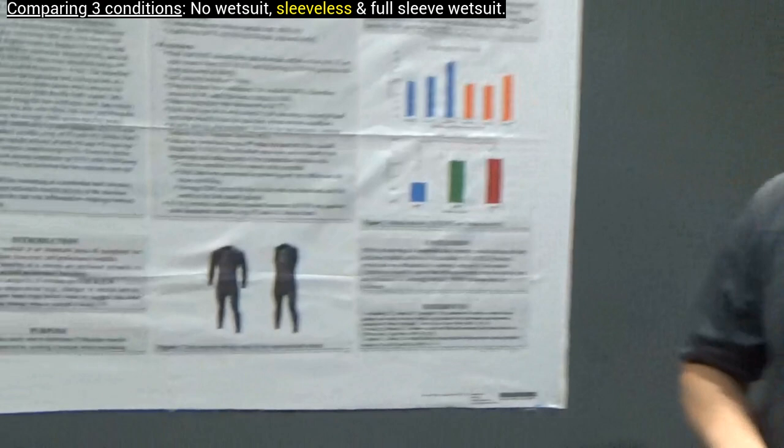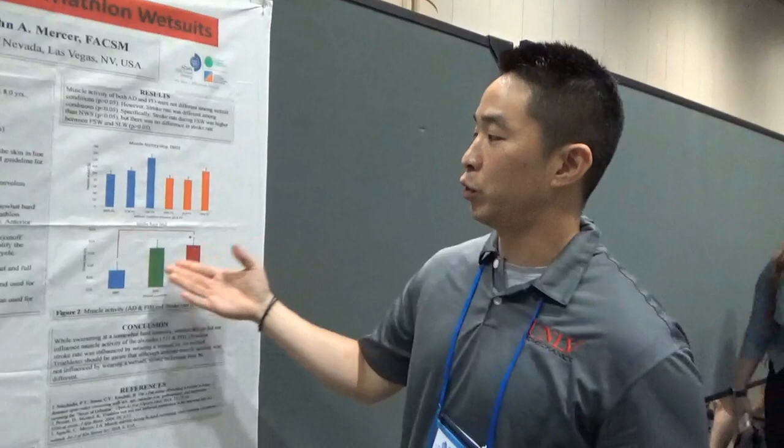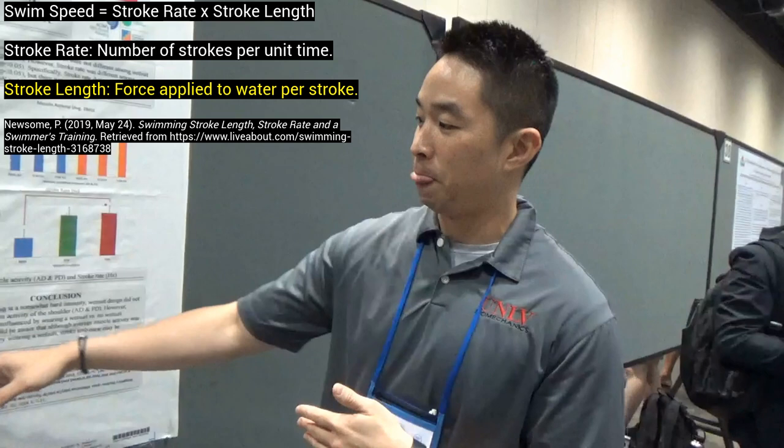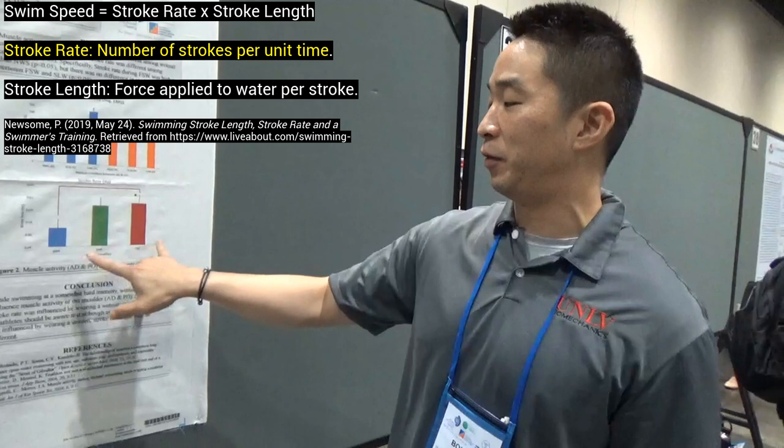The two main reasons people wear a wetsuit are: one, thermal regulation — to maintain body temperature during long swimming in cold water; and two, increased buoyancy force. Wearing a wetsuit makes it easier to maintain streamline position, which reduces drag force and wave drag. The study investigated whether muscle activity differs when wearing three different wetsuit conditions: no wetsuit, sleeveless wetsuit, and full-sleeve wetsuit. Muscle activity was not significantly different between conditions, but stroke rate was significantly different — especially between no wetsuit and full-sleeve wetsuit. Stroke length did not change across conditions, but swimming speed equals stroke rate multiplied by stroke length.